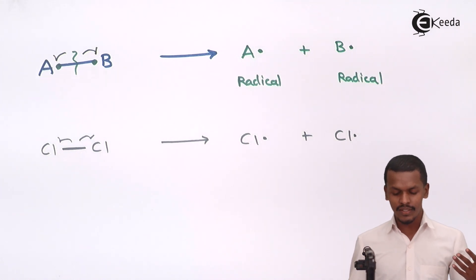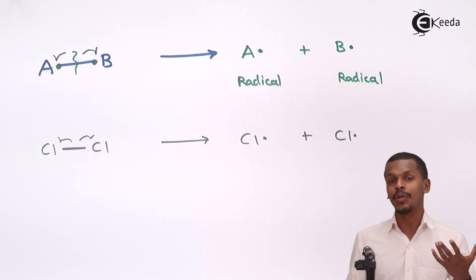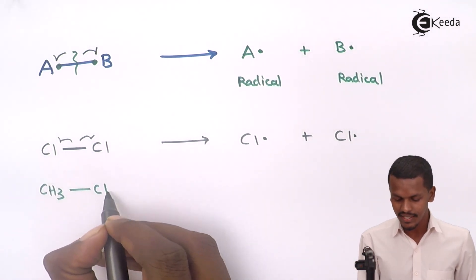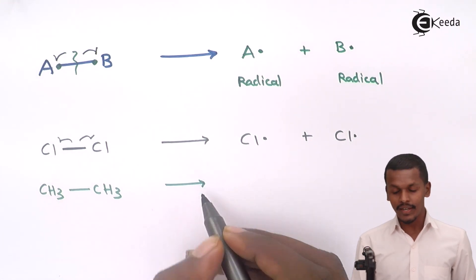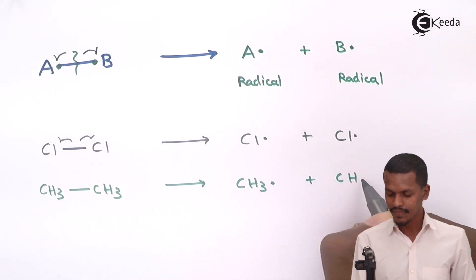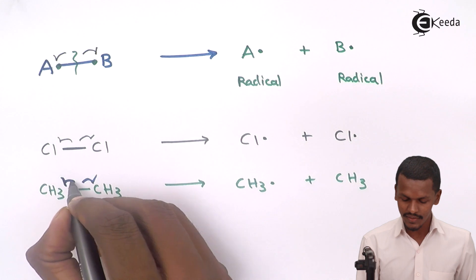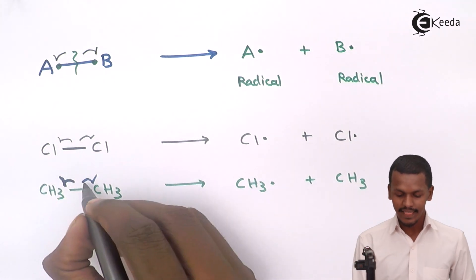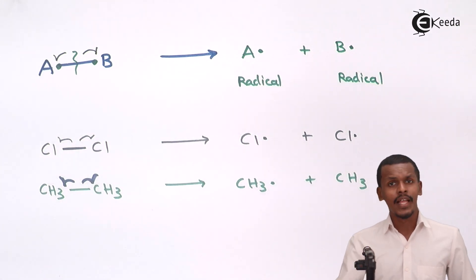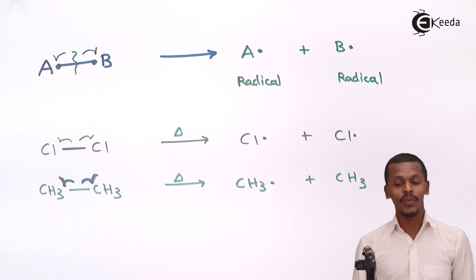Another example is ethane, CH₃–CH₃. When ethane undergoes homolytic fission, we get two CH₃ radicals, represented with fish hook arrows to show that the electron is distributed symmetrically. This kind of homolytic fission is possible only if we provide heat or UV light.